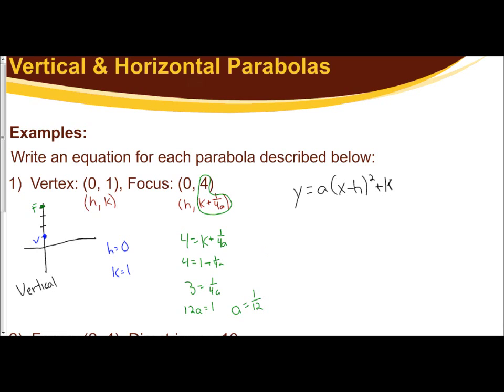So now I have all of my values. I can see that y equals my a is 1/12 times the quantity. Now it's x minus 0 squared plus 1, but subtracting 0 doesn't do anything, so we can just ignore that and write y equals 1/12 x squared plus 1. This is the approach that is using the formulas. To me, it's easy to use the formulas to find your vertex, but to find the a value, it's a little abstract. It's a little complicated.